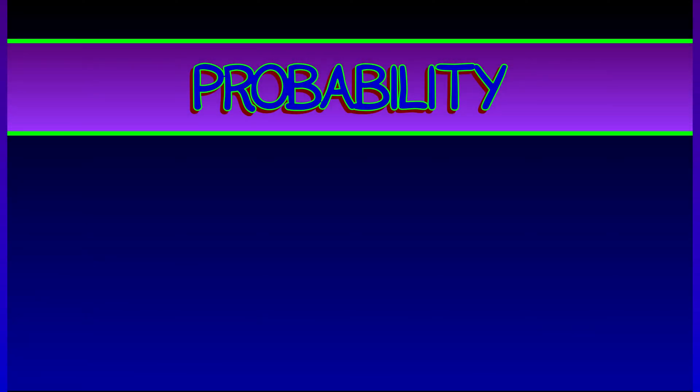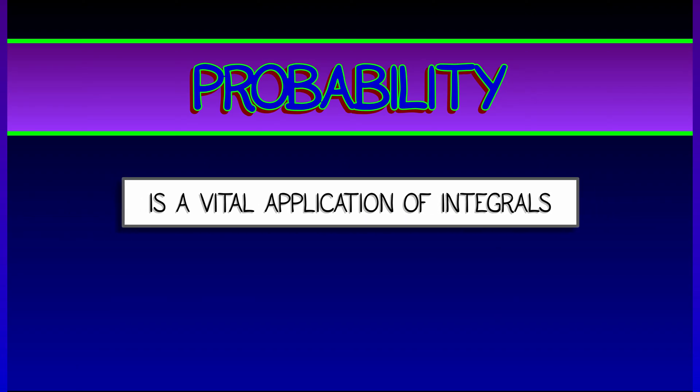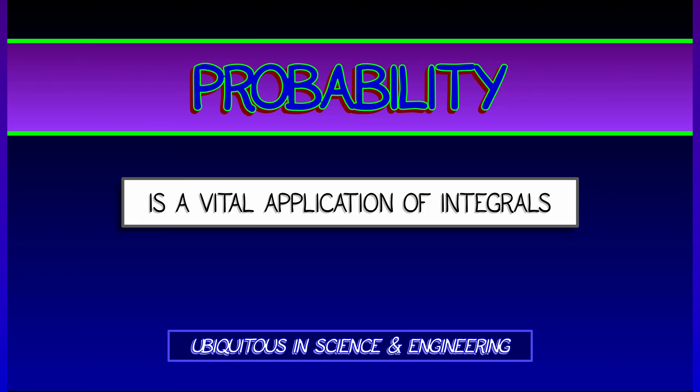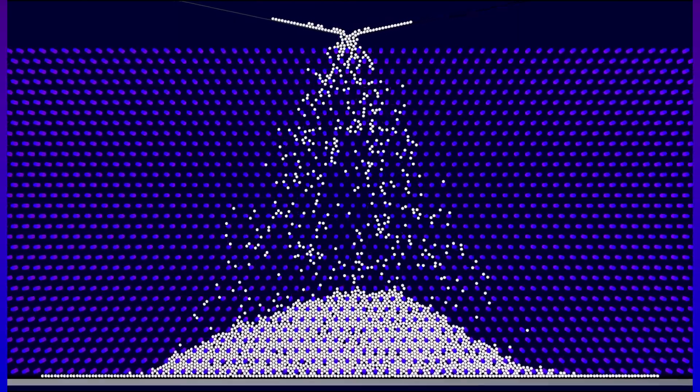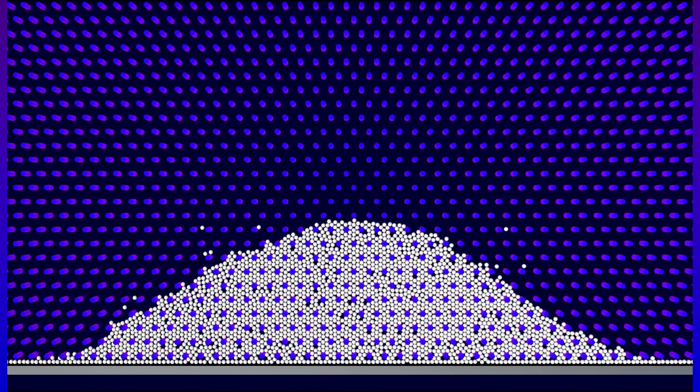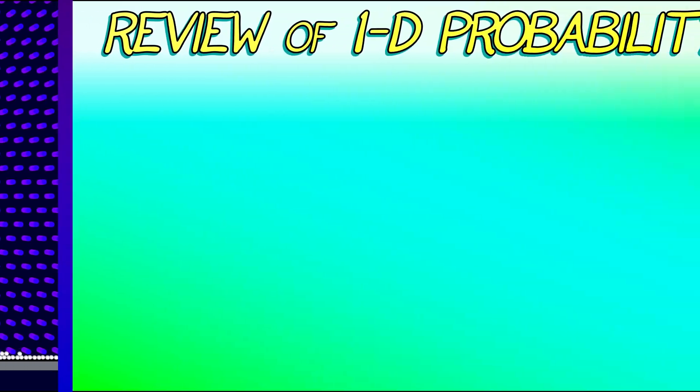Let's review a few key ideas in basic probability, which is such a vital application of integrals. It is useful all over the place — anytime you've got any sort of process in science and engineering where there's randomness, where there's uncertainty, where it's not completely deterministic, then you are in the realm of probability. Even though there's randomness involved, we can nevertheless do mathematics and make deductions about what tends to happen.